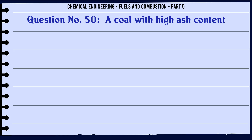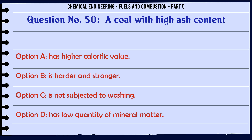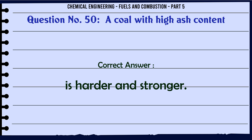Coal with high ash content: A. Has higher calorific value. B. Is harder and stronger. C. Is not subjected to washing. D. Has low quantity of mineral matter. The correct answer is is harder and stronger.